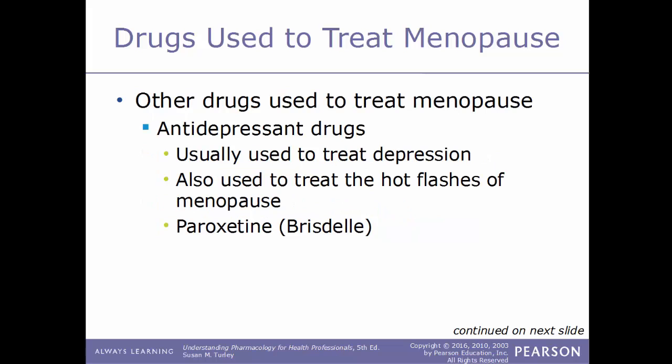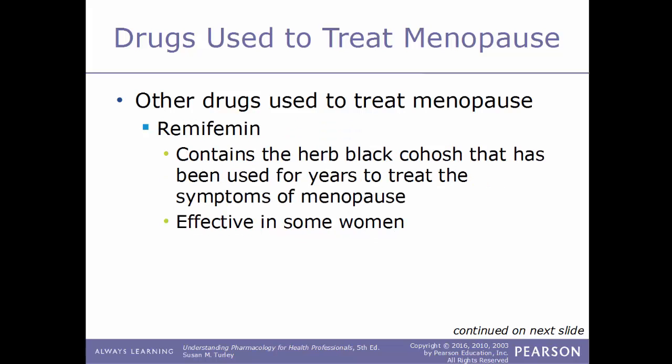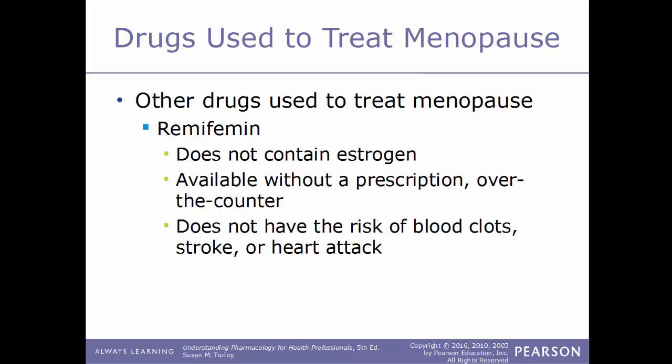Other drugs used to treat menopause include antidepressants, which can also treat the hot flashes associated with menopause. An example is paroxetine, known by the trade name Brisdelle. Another drug is Remifemin, which contains the herb Black Cohosh that has been used for years to treat symptoms of menopause and can be effective in some women. This does not contain estrogen, is available without a prescription as an over-the-counter herbal treatment, and does not carry the risk of blood clots, stroke, or heart attack.